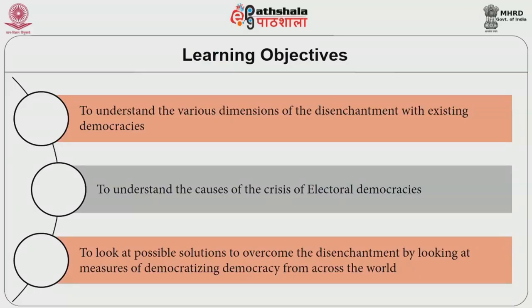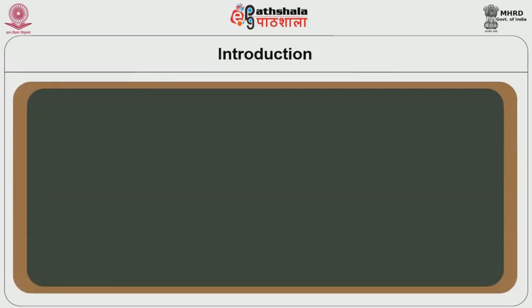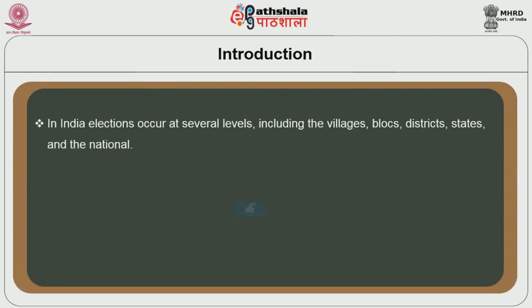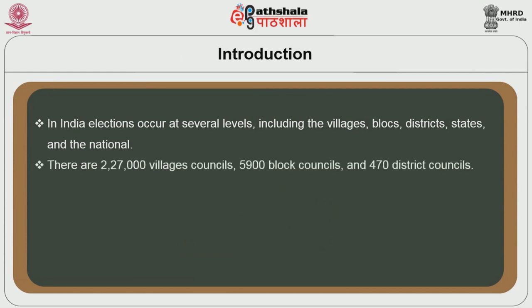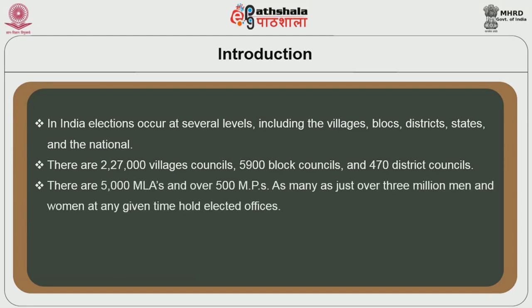However, as this module will discuss, there were severe limitations to this form of electoral democracy. In India, elections occur at several levels including the villages, blocks, districts, states and the national. There are 227,000 village councils, 5,900 block councils and 470 district councils. There are 5,000 MLAs, that is members of legislative assemblies, and over 500 members of parliaments.